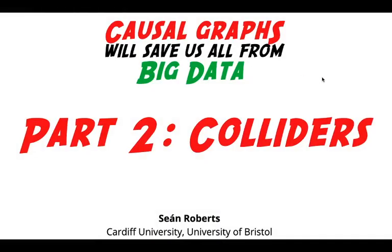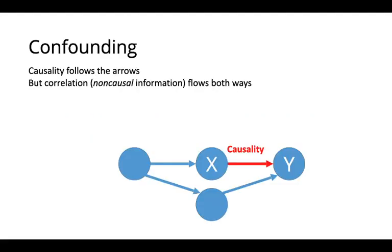Hello, this is part two of the causal graph tutorial on colliders. When we do science, one of the fundamental problems is confounds.